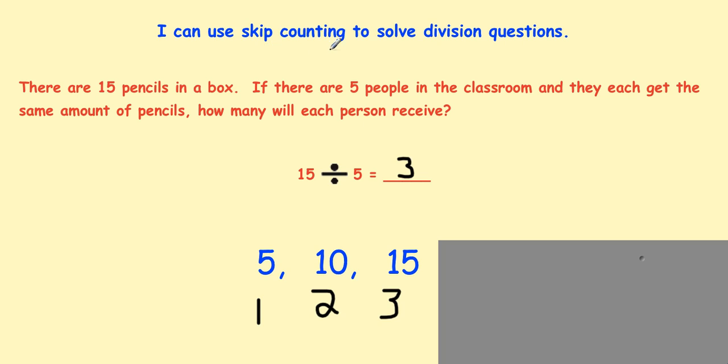So this is using the strategy of skip counting. And just as a reminder, you skip count by the divisor up till you get to the dividend. Then you see how many groups of that number you've created. And however many groups you've created is your quotient.